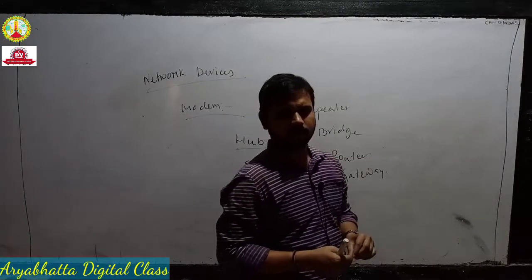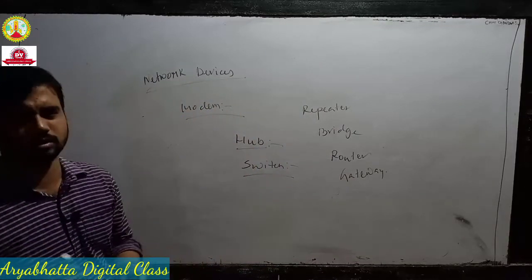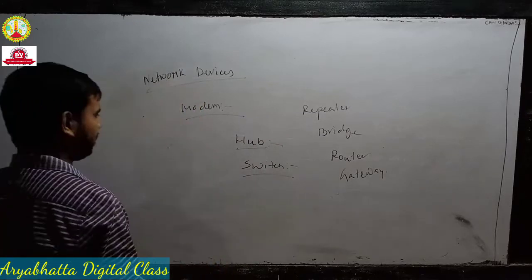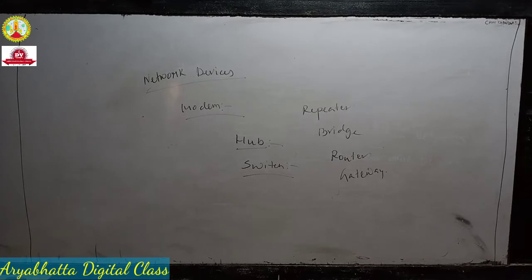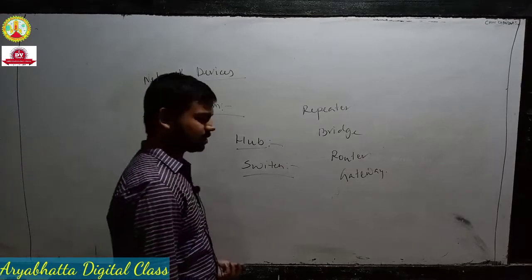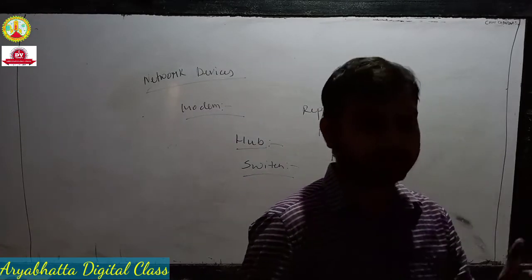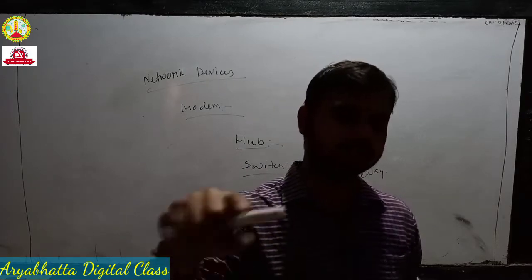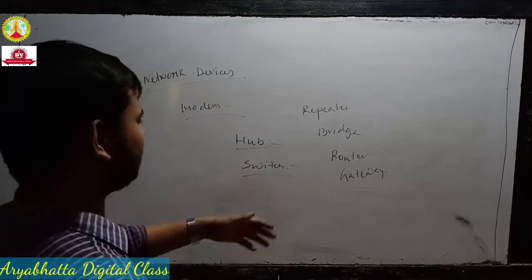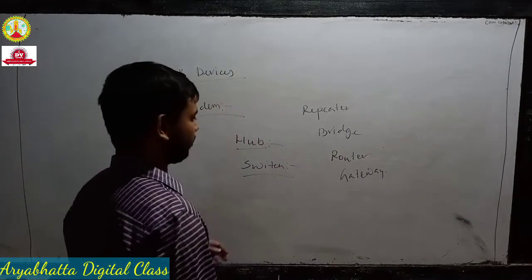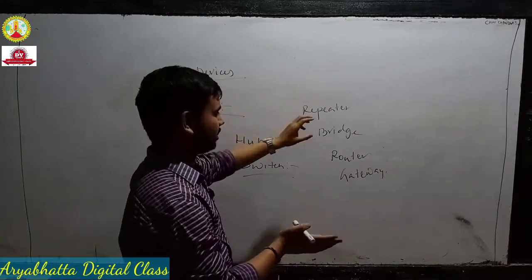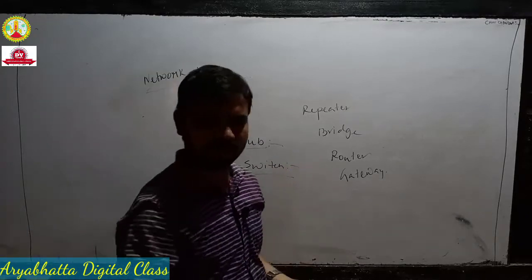All these devices are similar to each other but have some differences. Modem is similar to hub but with some difference — switch, repeater, bridge, router, gateway each have differences in connection technique. Bridge is connected between two autonomous networks — that is the bridge connection. You just read it and see the diagram in the book; it is easily understood. Also Wi-Fi card is one of the network devices.